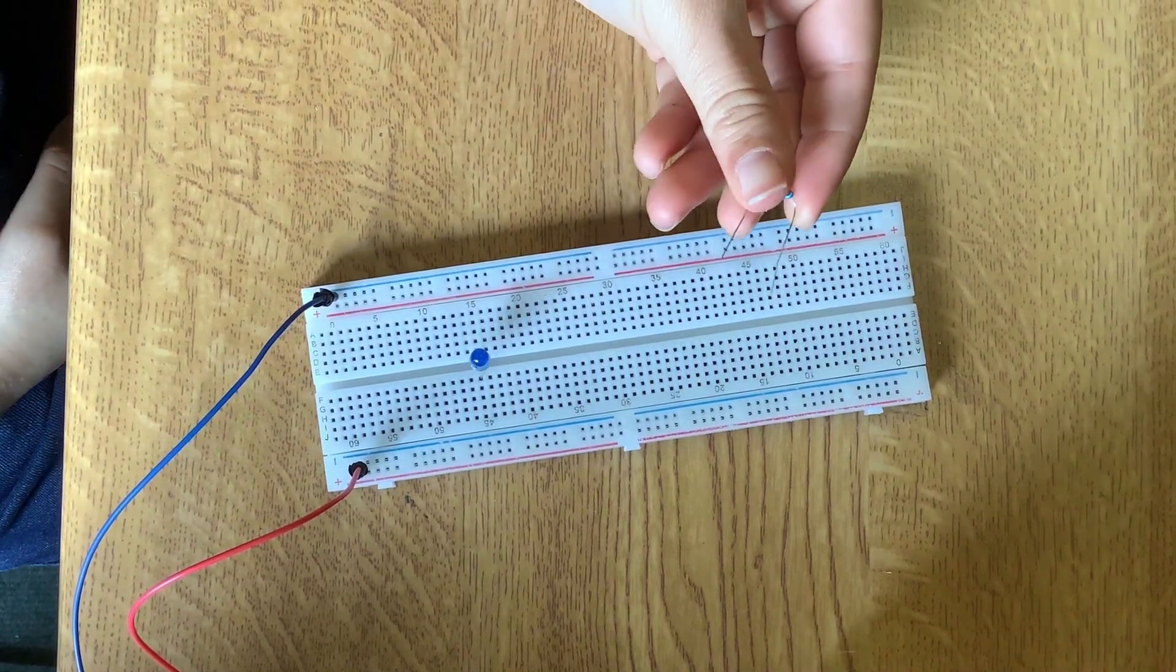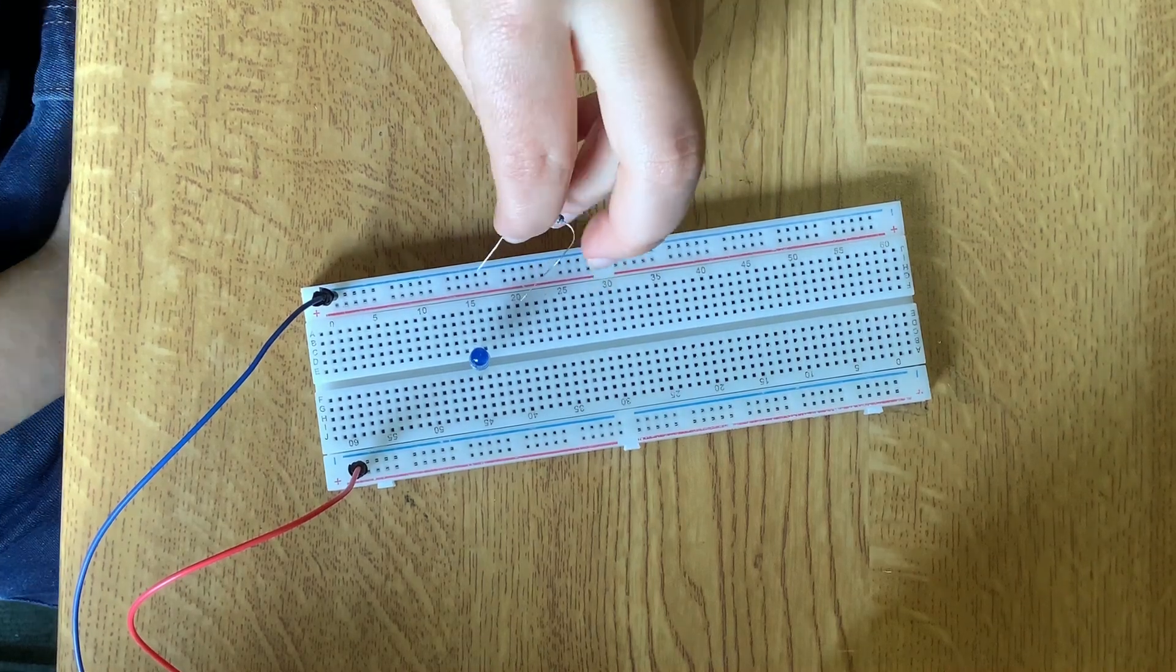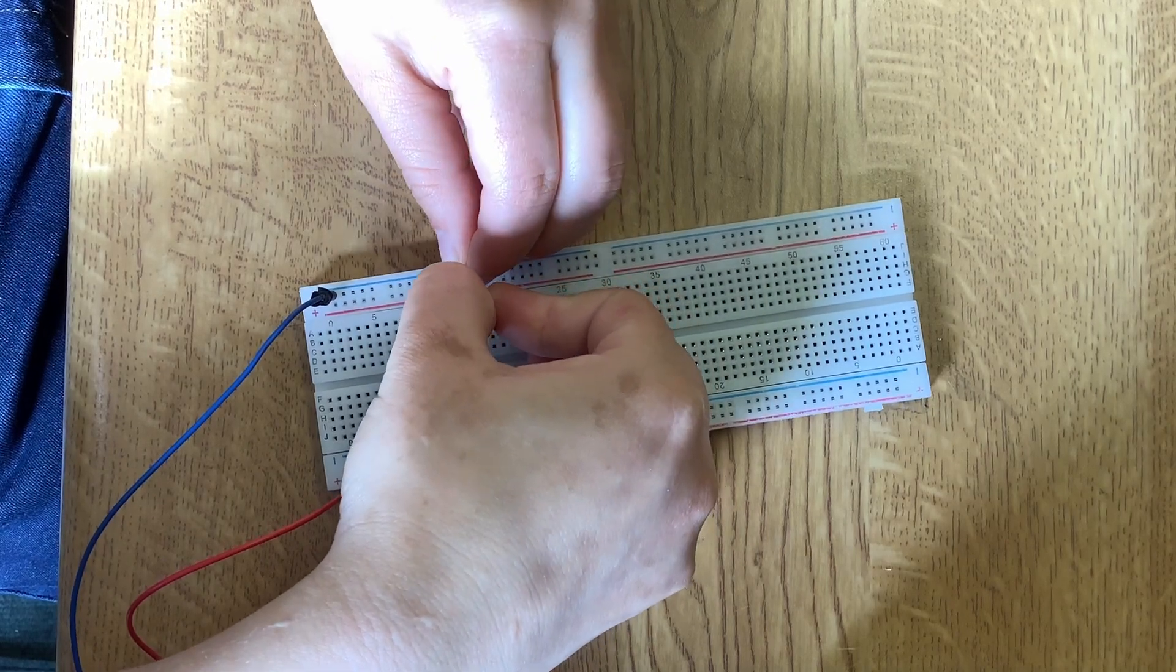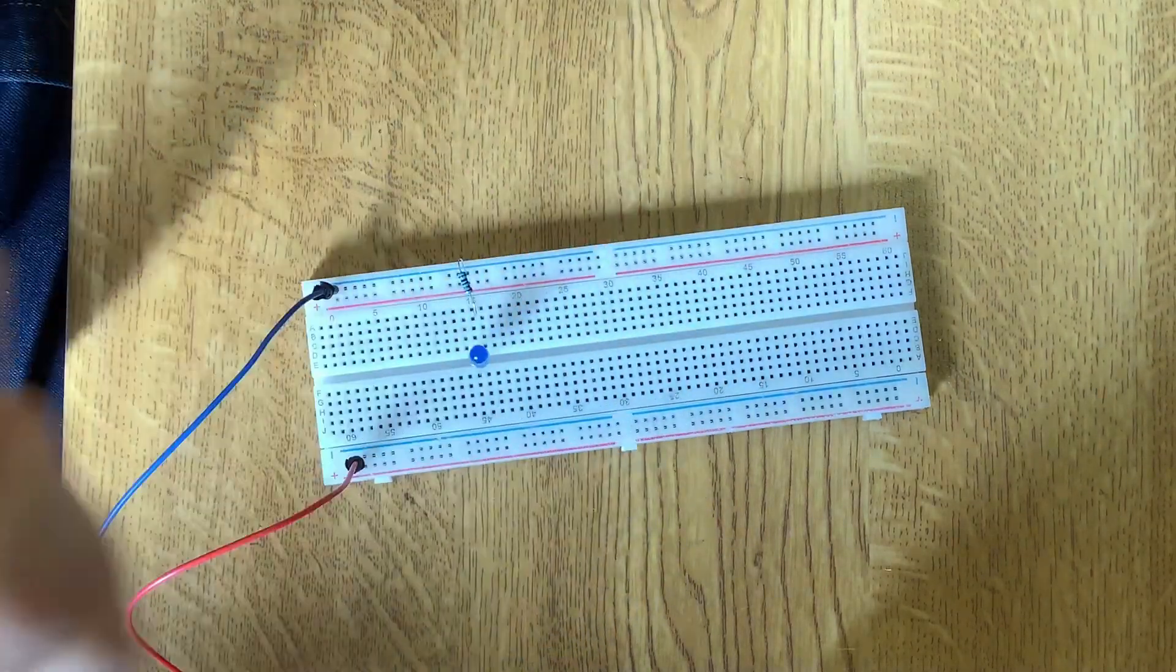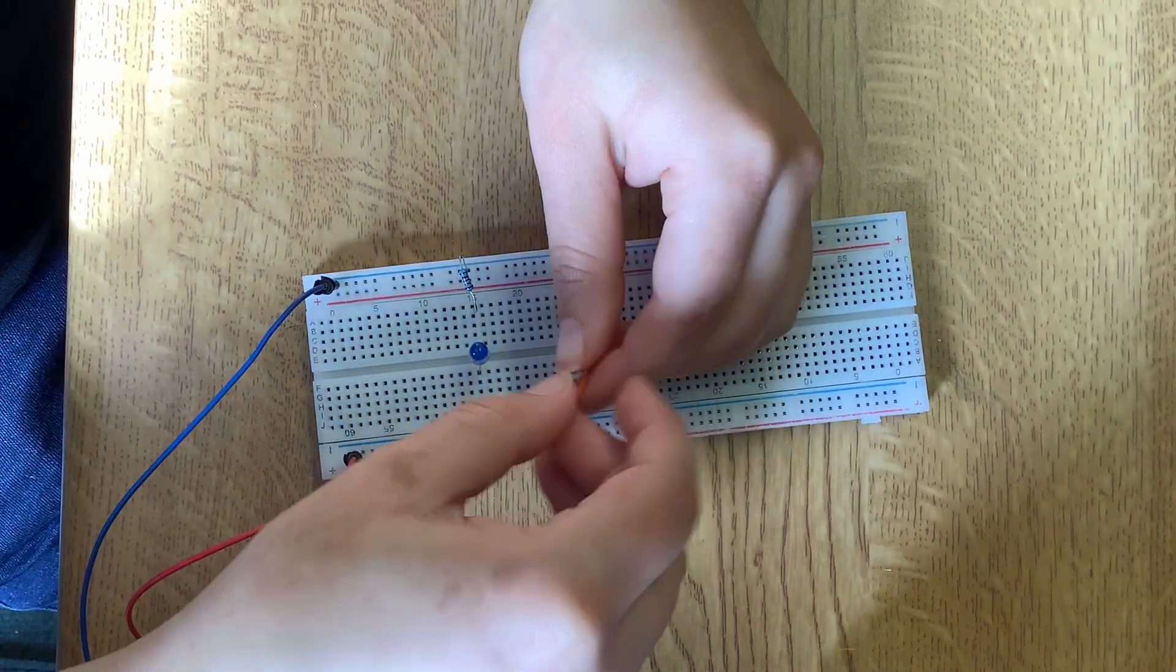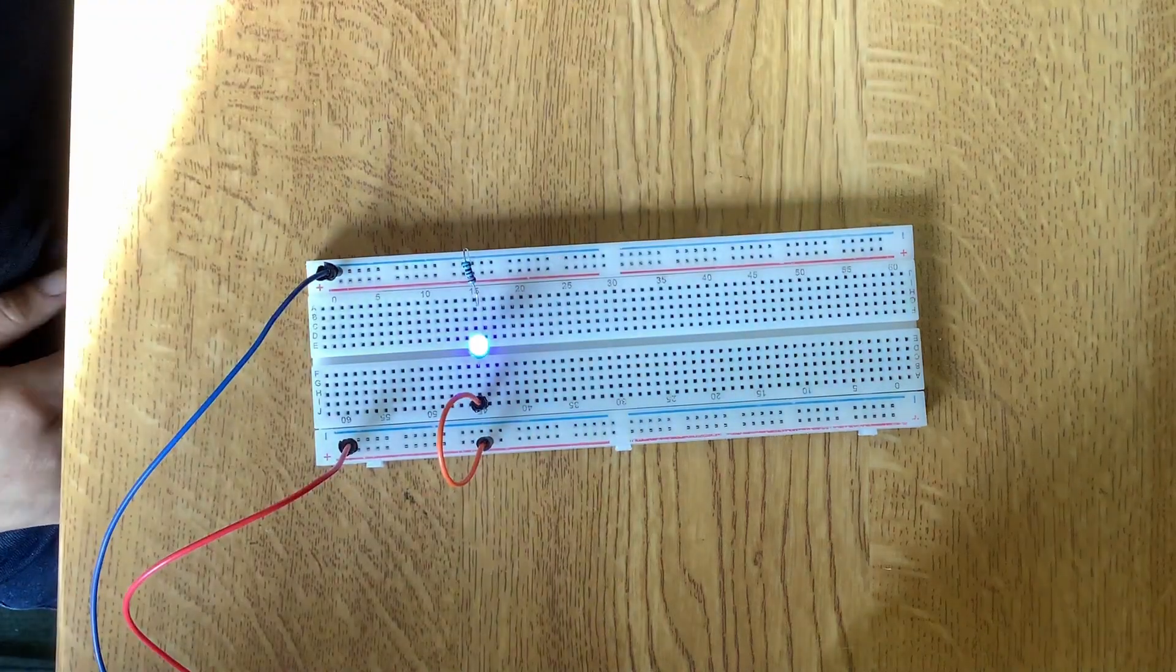With an LED it's always better to use a resistor to protect it from current and now if we put it in line 15 and connect it to ground and this now goes to the 3.3 volts here and it works.